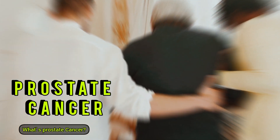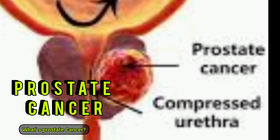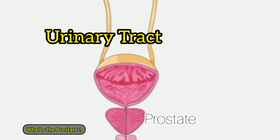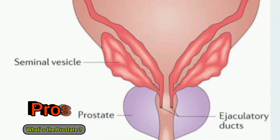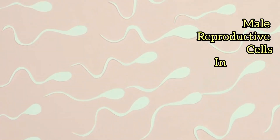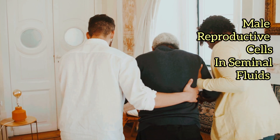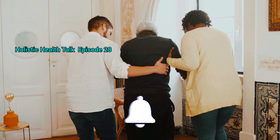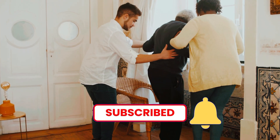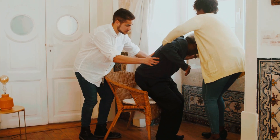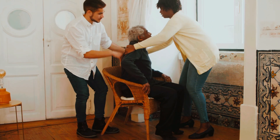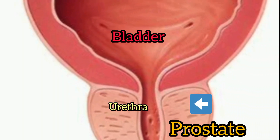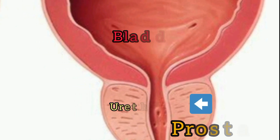Prostate cancer is a cancer that occurs in the prostate. The prostate is a small, walnut-shaped gland in males that produces the seminal fluid that nourishes and transports the male reproductive cells. It is both an accessory gland of the male reproductive system and a muscle-driven mechanical switch between urination and the reproductive system. Anatomically, the prostate is found below the bladder with the urethra passing through it.